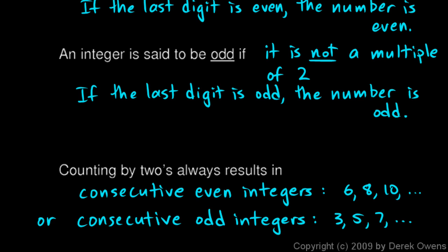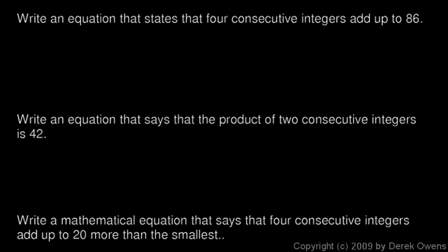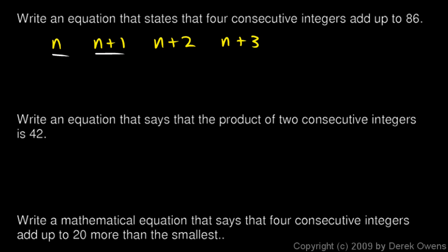Next, we'll look at some example problems that deal with these ideas of consecutive integers. The first example: write an equation that states that 4 consecutive integers add up to 86. Four consecutive integers would be this — I'll call the first one n. The next one will have to be n plus 1, then n plus 2, and then n plus 3. So, those four things are four consecutive integers, and we're told they add up to 86: n + (n+1) + (n+2) + (n+3) = 86. That's our answer.